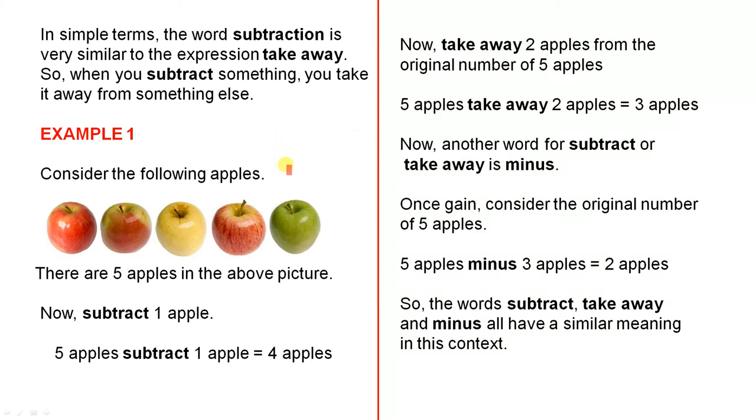Example 1. Consider the following apples. There are five apples in the above picture. You can see them very clearly. Now subtract one apple. Five apples subtract one apple equals four apples. Let's assume we take this green one away. Assume it disappears and it's no longer there. We only have four apples left. One, two, three, four. Why? Because we have subtracted this green one. We've taken it away.